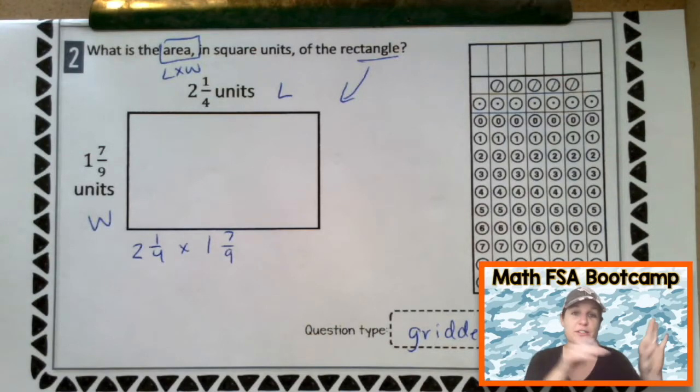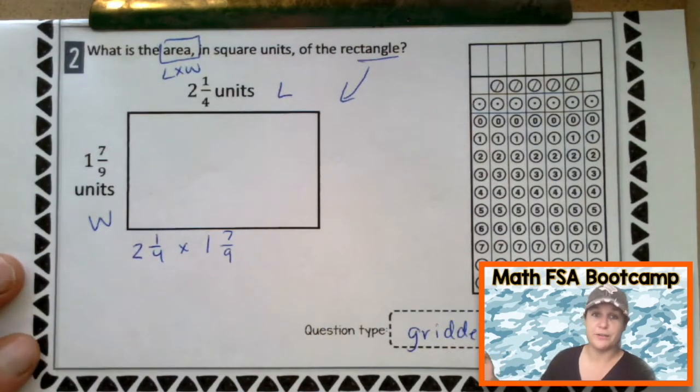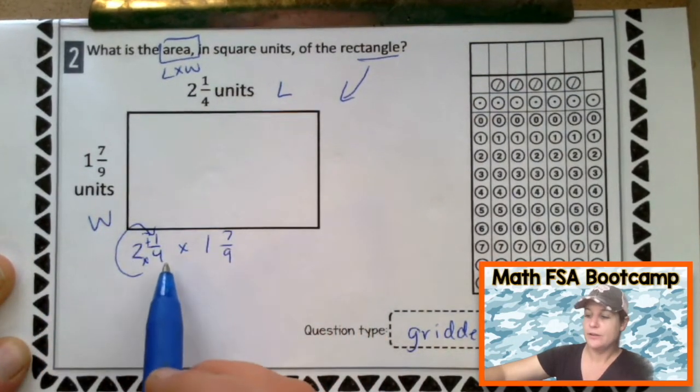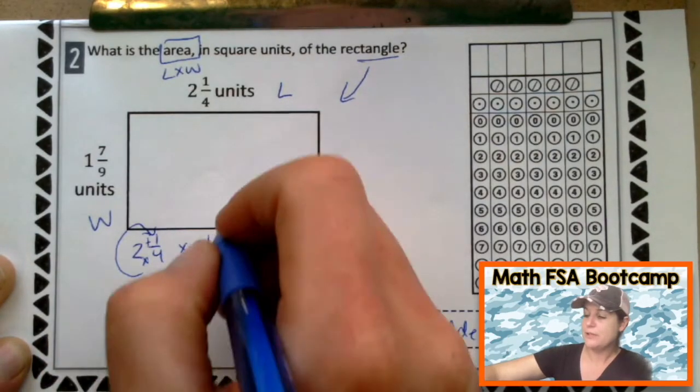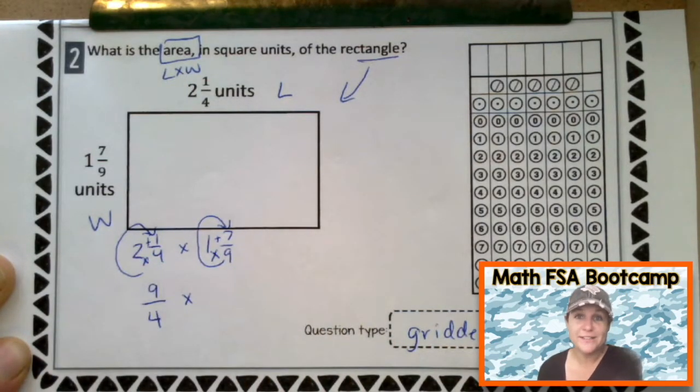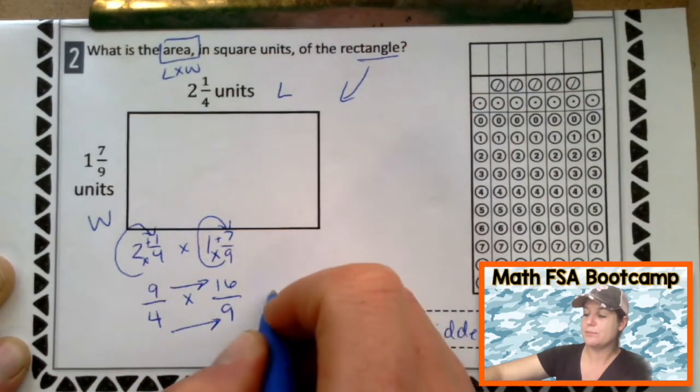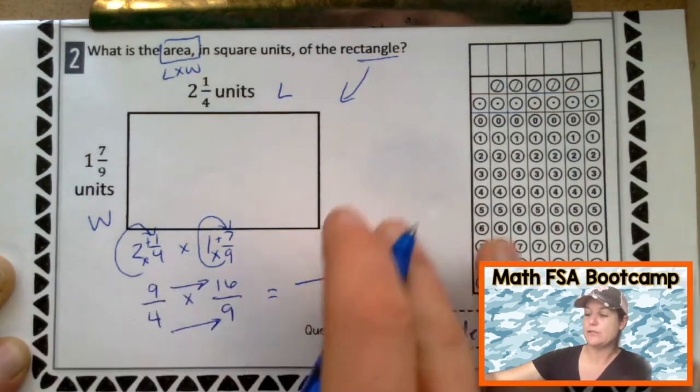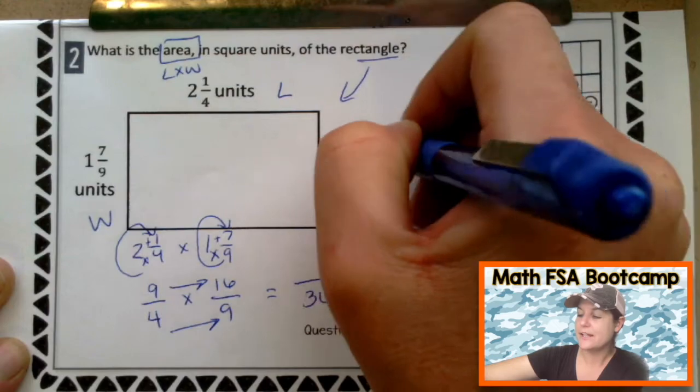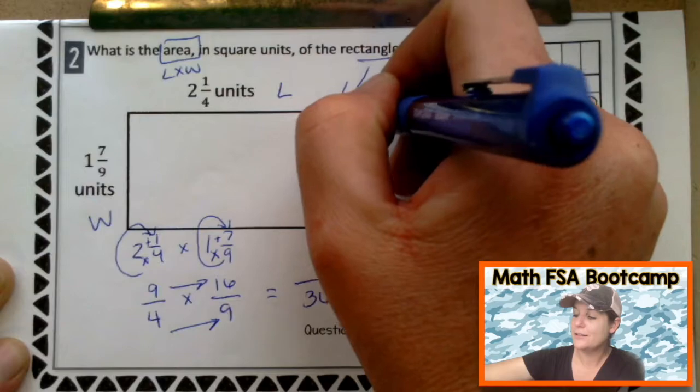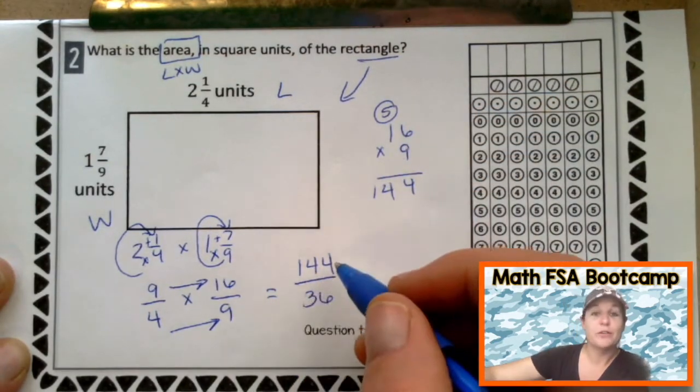And again, when we multiply fractions, we just fly across and multiply. But because we have a whole number in front of both of these, we need to convert it into a fraction greater than one. So let's do that. Multiply, then add. Four times two is eight plus one is nine. Nine-fourths. Times. Multiply, then add. Nine times one is nine plus seven is sixteen-ninths. All right. Now we can fly across and multiply. Well, I know that I'm going to have to do nine times sixteen kind of over to the side. But I do know what four times nine is. What's four times nine? It is thirty-six. Good. And now let me take sixteen times nine over here. Nine times six is fifty-four. Nine times one is nine plus four is fourteen. So one hundred forty-four. One hundred forty-four thirty-sixths.